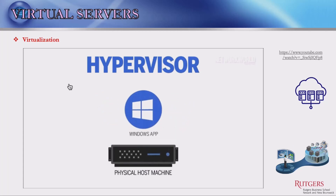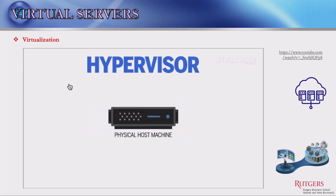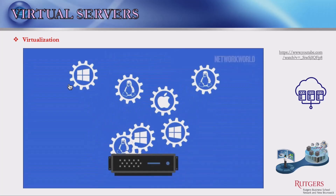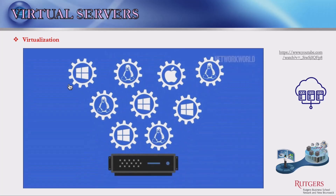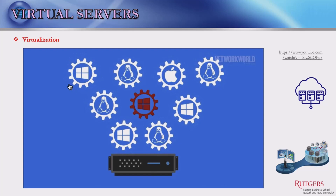For example, one physical server can run a Windows app using some memory, while a Linux app uses the leftover memory simultaneously. One machine instead of many, multiplied across hundreds or thousands of machines and apps. Furthermore, if one virtual machine falls prey to an error, system crash, or virus attack, other virtual machines on the same device will still operate just fine.